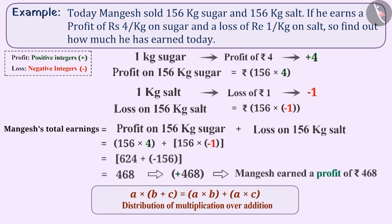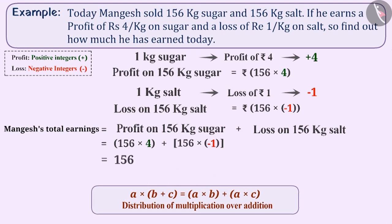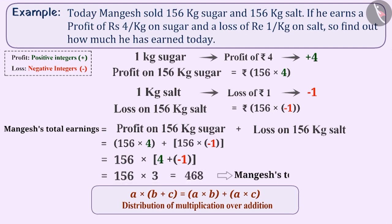We can make it even easier by using the distributive property. We take 156 out of the brackets and keep (4 plus minus 1) inside: 156 multiplied by (4 plus minus 1). The sum of 4 and minus 1 is 3, and 156 multiplied by 3 equals rupees 468. So Mangesh's total earning is 468 rupees. You can see multiplication can be made easier by using the distributive property.